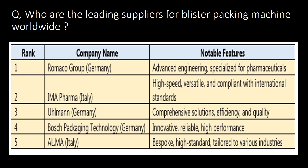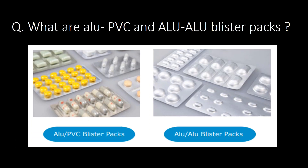Who are the leading suppliers for blister packing machines in India? You can refer to the table below for leading suppliers for blister packing machines worldwide and their notable features. Additionally, you can refer to the pictorials below to understand the difference between alu-PVC and alu-alu blister packs.